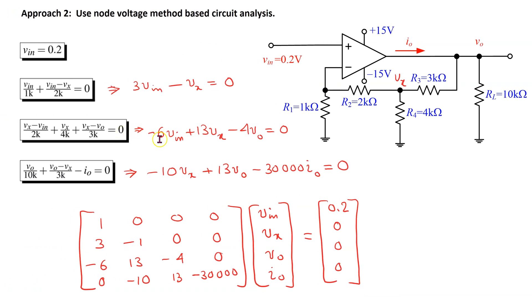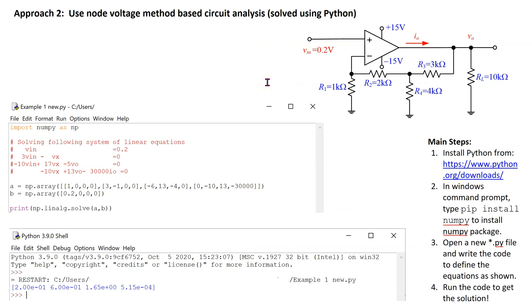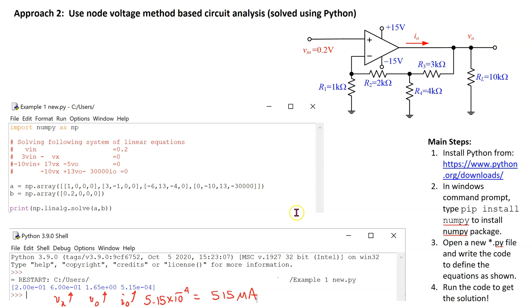These circuit equations can be easily manipulated and converted to standard matrix form. We can solve the equations using any means; for instance, we can use the numpy package in Python. Using Python, Vx comes out to 0.6 volts, V0 comes out to 1.65 volts, and I0 comes out to 5.15 times 10 to the power minus 4, which is the same as 515 microamps as before. This confirms the solution.